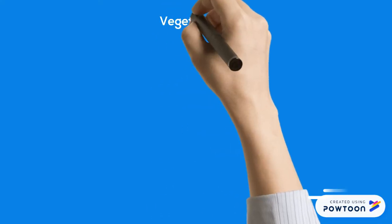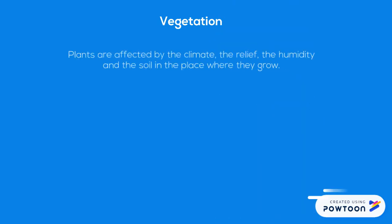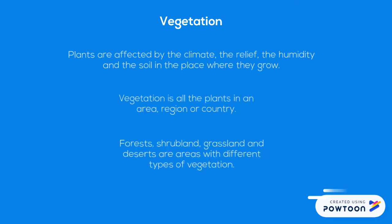We are going to study vegetation now. Plants are affected by the climate, the relief, the humidity and the soil in the place where they grow. Vegetation is all the plants in an area, region or country. Forests, shrubland, grassland and deserts are areas with different types of vegetation.